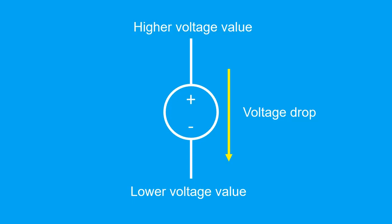If the current instead flows from the negative to the positive terminal, the voltage changes from a lower to a higher value, indicating a voltage gain.